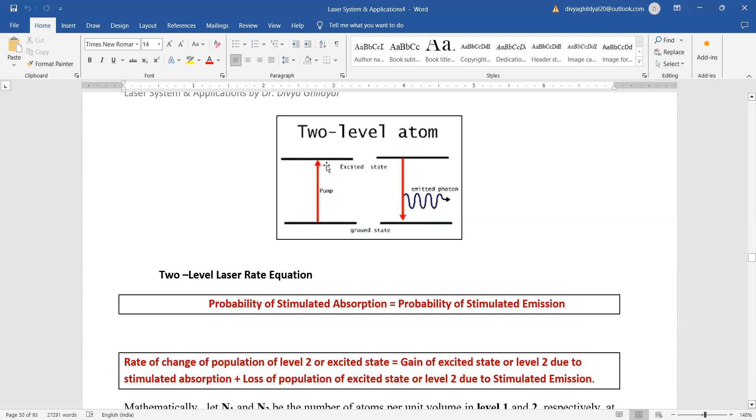Whatever number of atoms have been absorbed and pumped, approximately that much will be there giving the probability of stimulated emission. So rate of change of population of level two or excited state is equal to gain of excited state or level two due to stimulated absorption.